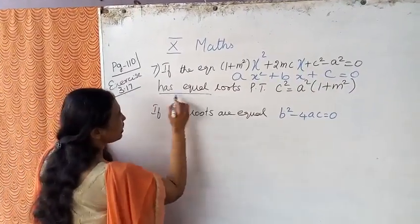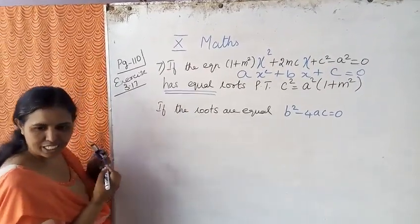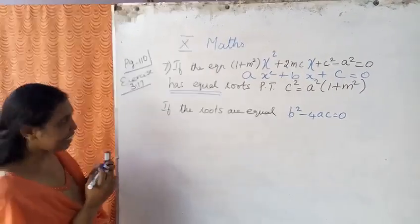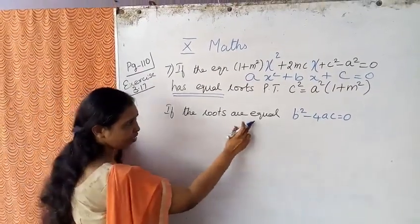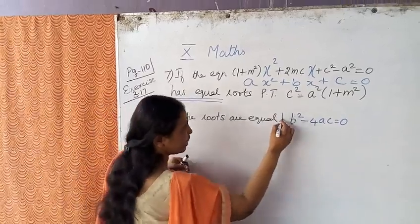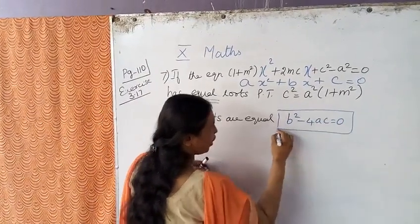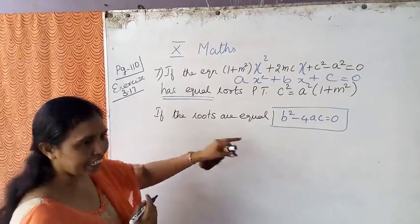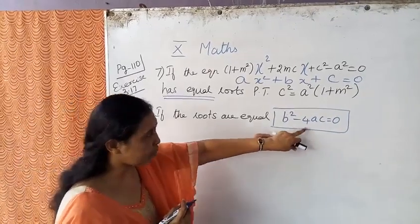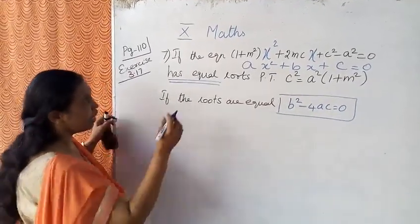It has equal roots. If the roots are equal, the condition is b square minus 4ac equal to 0.